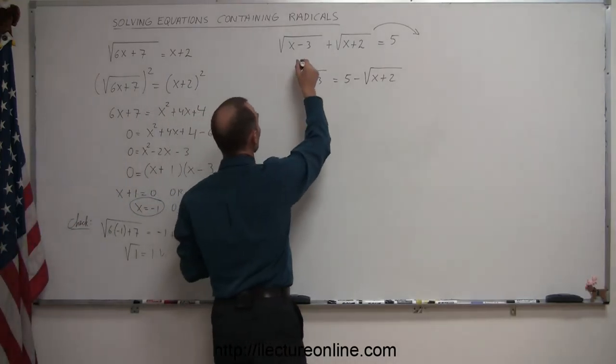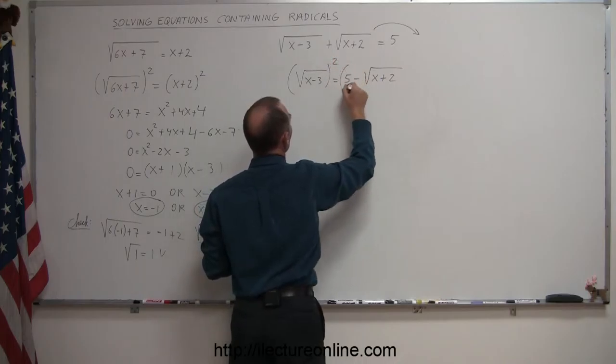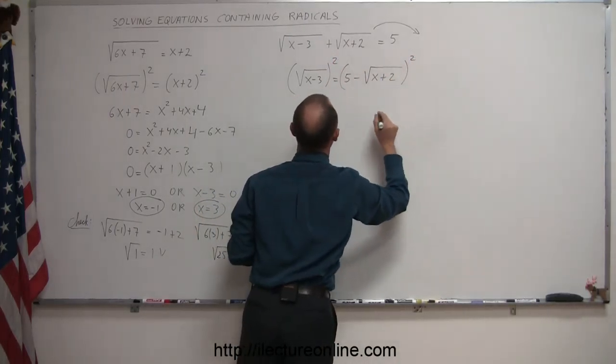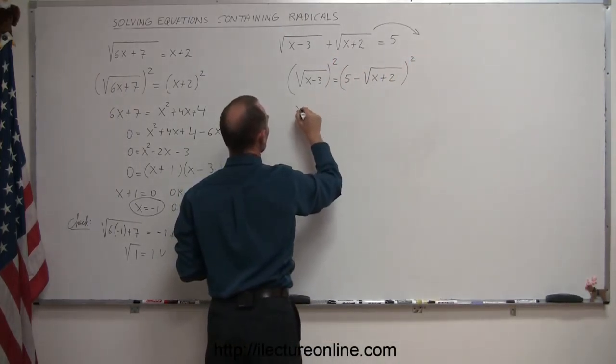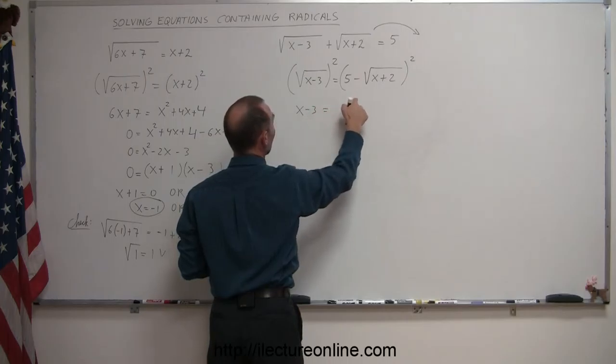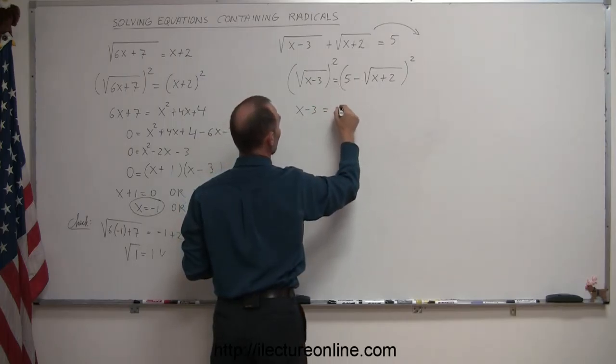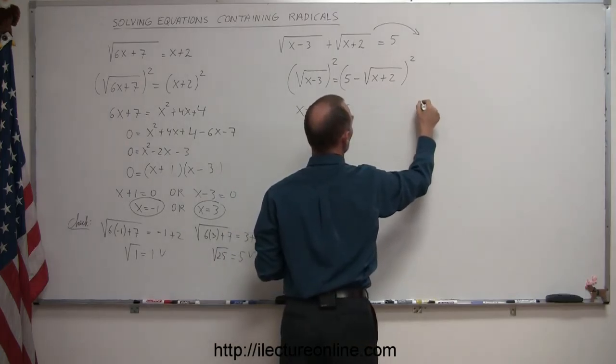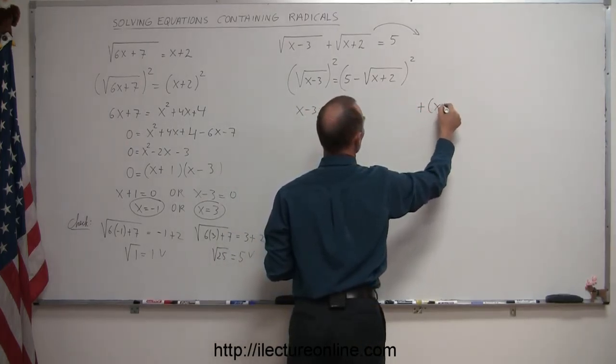Now let's go ahead and square both sides. So we square the left side and we square the right side. If we square the left side, we get x minus 3. If we square the right side, we take the first square, which is 25, plus the last one squared, which is plus the quantity x plus 2.